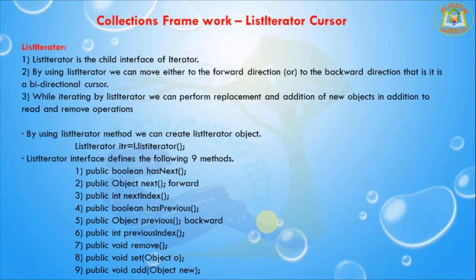ListIterator is the child interface of Iterator. By using ListIterator we can move in either the forward or backward direction — it is a bidirectional cursor. While iterating with ListIterator, we can perform replacement and addition of new objects in addition to read and remove operations. We can create the ListIterator object by calling collection_object.listIterator(). There are nine methods available in the ListIterator.